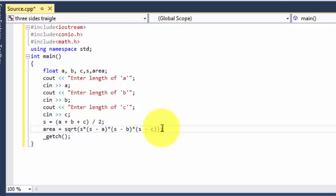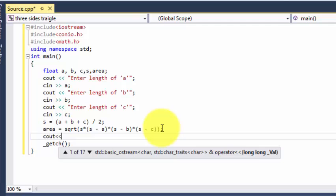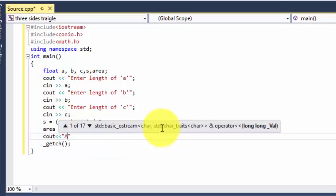This is our formula, now we get the answer. What we are going to do is print the area, so cout "area of three sides triangle is" and then the area value.